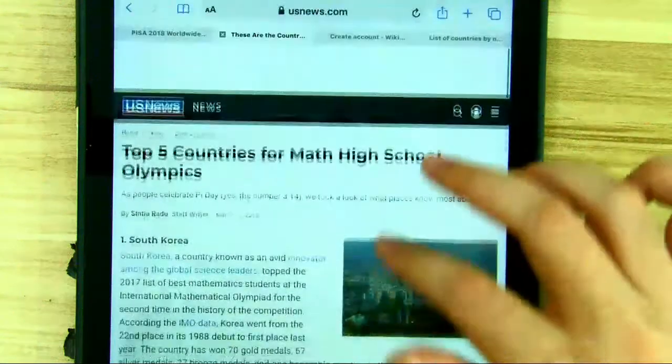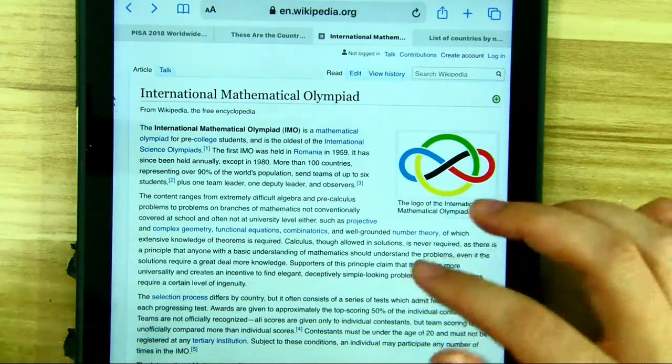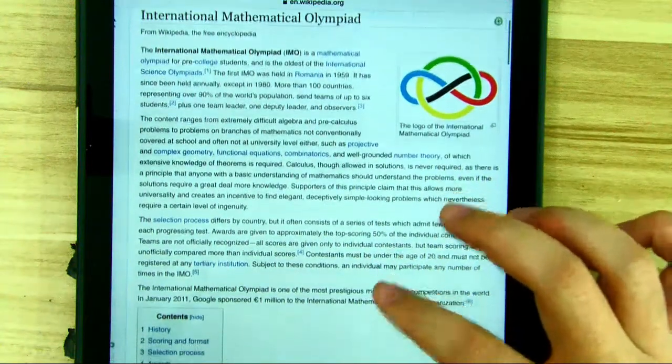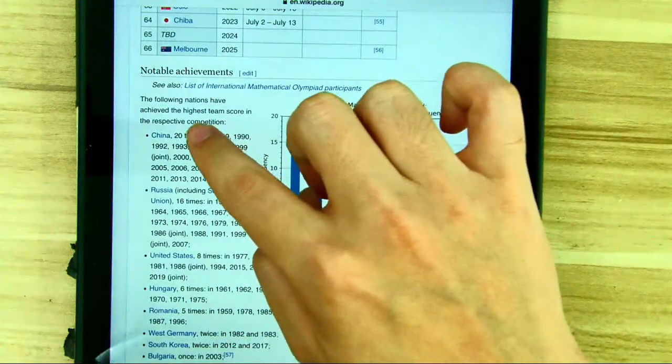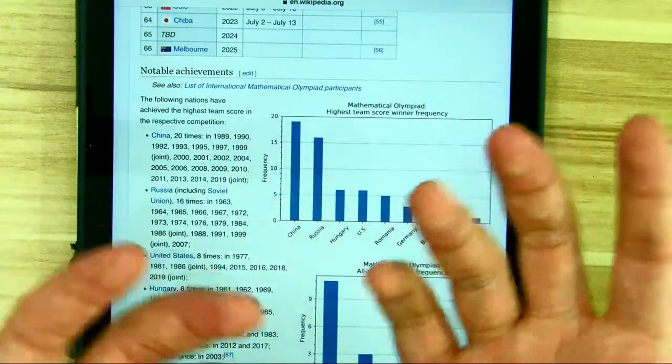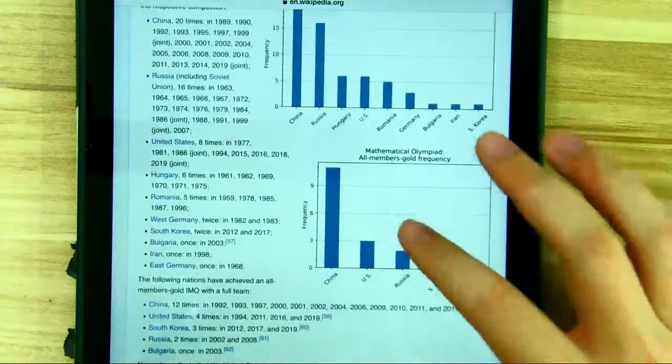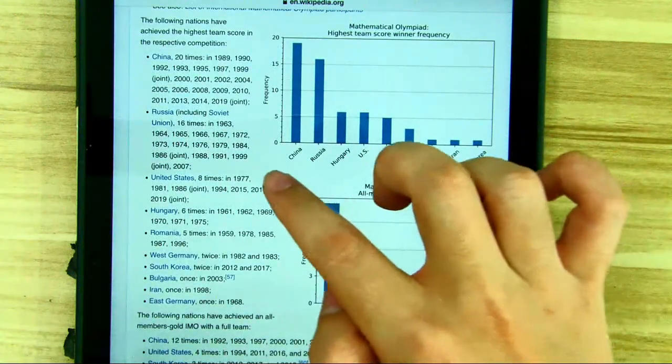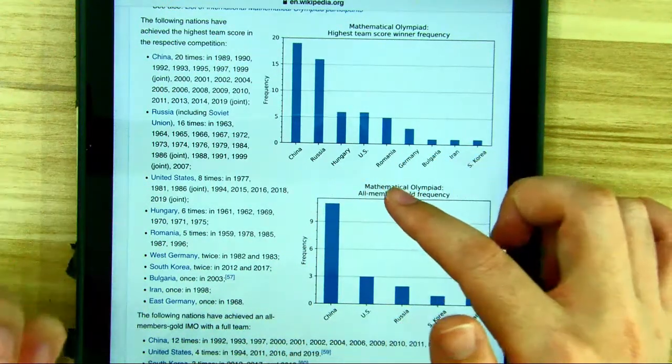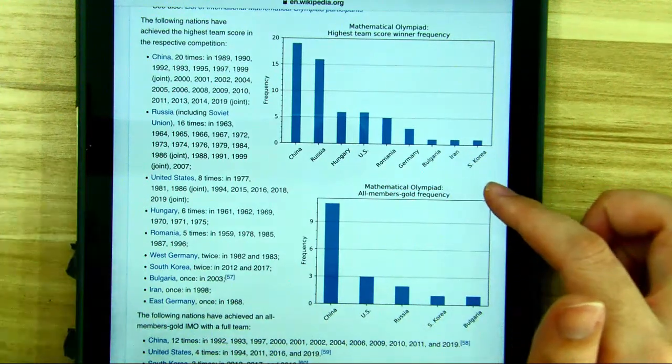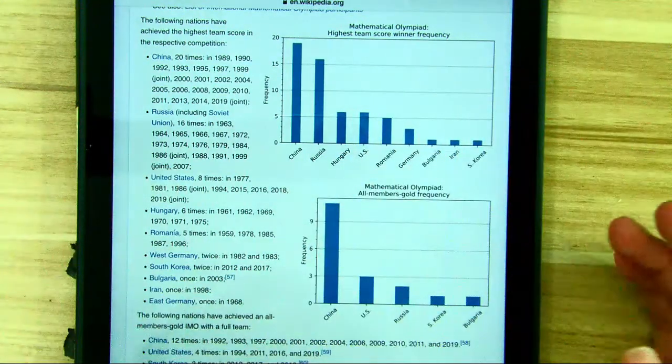And there are some more results in the IMO in Wikipedia. And you can see that in this chart, it listed the highest team score every year, which nation scored the highest in every year. And you can see from these charts, there are China, Russia, Hungary, US, Romania, Germany, Bulgaria, Iran, and South Korea. Seems to me it's like a tie.